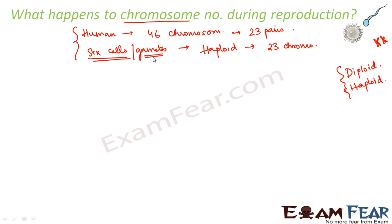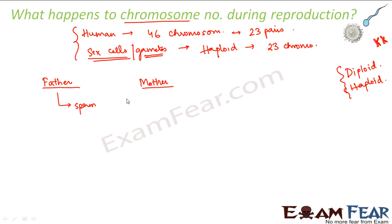During reproduction in human beings, which is sexual, we need two parents — a father and a mother. From the father's body, a sperm is produced. During the process of sexual reproduction, this sperm enters inside the mother's body and fuses with the egg cell of the mother's body. When these two fuse, a zygote is formed.